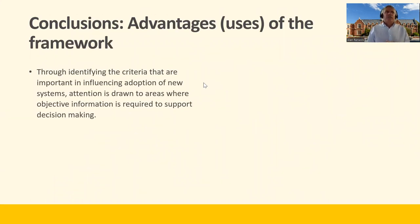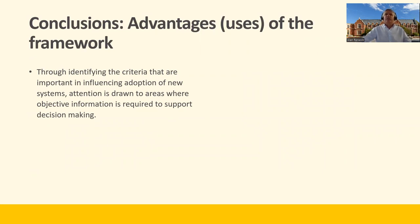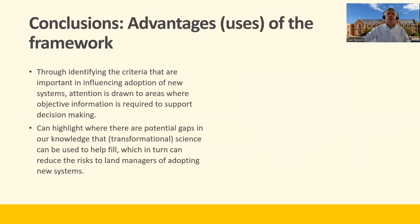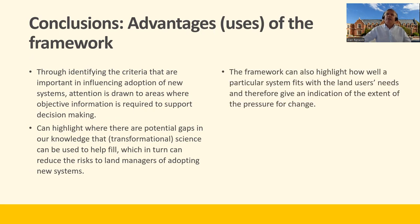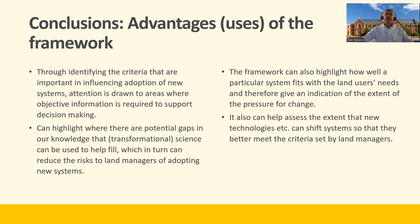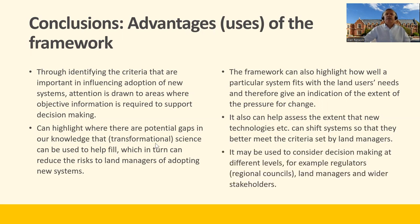To finish our brief overview, let's think about some advantages of the framework. We can identify criteria that are important in influencing the adoption of new systems and draw attention to the need for objective information to support decision making. It can highlight where there are potential gaps in our knowledge and where science can help. You can also think about how well a particular system fits with land users' needs, and how new technologies can shift systems so they better meet the criteria set by land managers. We can potentially use it for decision makers at different levels — maybe council, land managers, wider stakeholders — to see whether we can get some agreement about what they want to see from land use.